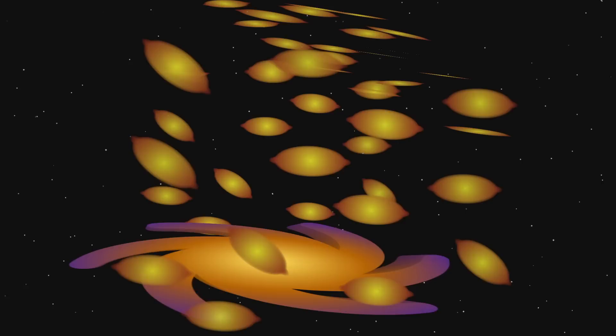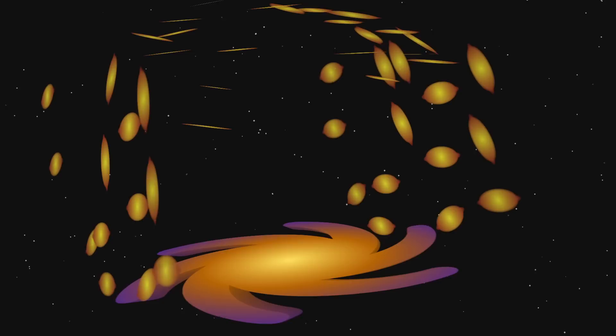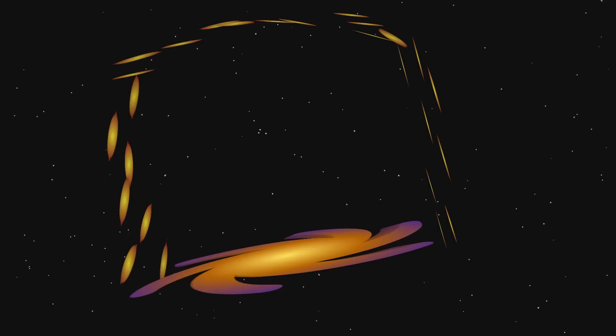However, while the WIMP theory solves many mysteries in astronomy, it doesn't solve all of them. For instance, when scientists use WIMP theory to simulate the formation of large galaxies like the Milky Way, the simulations predict many, perhaps as many as 500 small satellite galaxies buzzing around the periphery of the Milky Way. When astronomers look, they find only about 20.